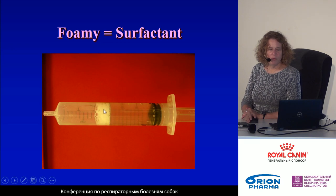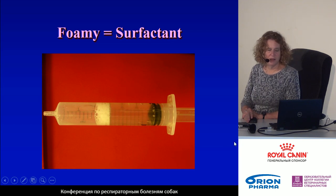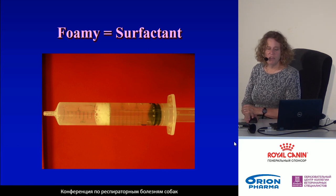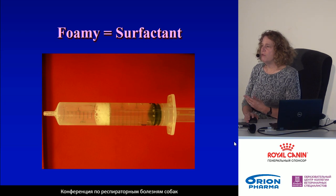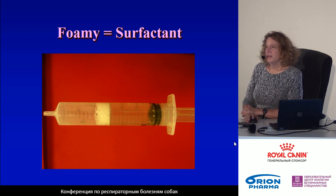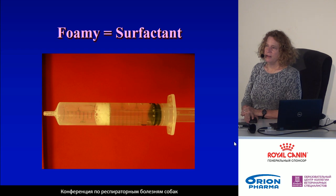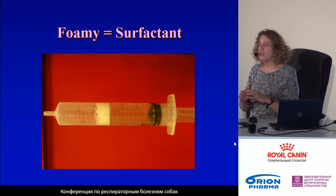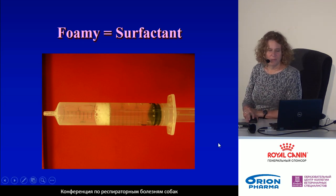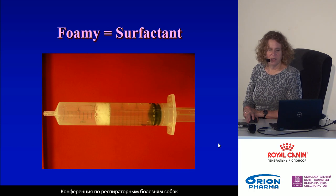The yield should look something like this, with foamy surfactant showing that you have an excellent sample. The appearance of the alveolar lavage fluid can vary — it may have a red tinge if there's blood, it may be very thick and flocculent with mucus, or it may appear relatively clear.